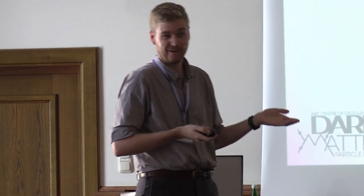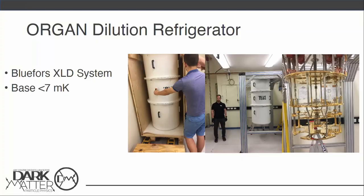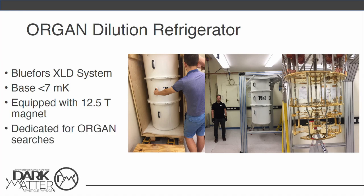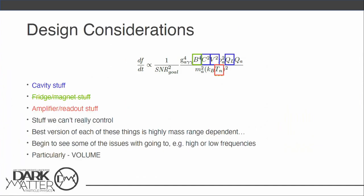Fortunately, one of these things is taken care of for us at least. We have this Bluefors dilution refrigerator. The base temperature on it, it's an XLD system, when it was installed went below the range of the calibrated sensors, so all we can say with confidence is it's somewhere below seven millikelvin, probably not lower than five and a bit, but it's somewhere in that range. It has a 12.5 Tesla magnet attached to it. And conveniently, it's dedicated for doing ORGAN searches. So we don't have to compete for time with other experiments. We can just throw anything in there and run it when it's ready.